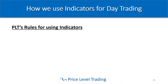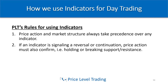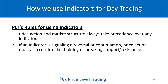Here are our rules for using indicators at PLT. Number one: price action and market structure always take precedence over any indicator. Number two: if an indicator is signaling a reversal or continuation, price action must also confirm — in other words, holding or breaking support and resistance. Number three: keep it simple by having no more than three indicators on your chart — less is more.